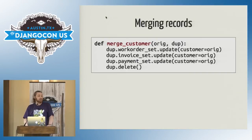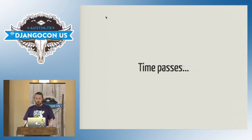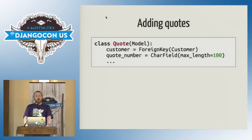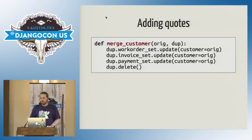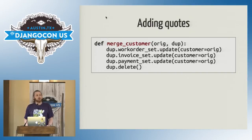We can easily define a merge operation for those customers. An existing customer could have work orders, invoices, and payments. Given a duplicate customer, we find all those related objects, update the foreign key references, and then delete the duplicate. Now you can merge customers to your heart's content. But time goes by, you decide to add new functionality — say, the ability to raise quotes. You define a quote model, roll out that code, and then someone merges a customer record, and all the quotes related to the dead instance disappear. What happened? The merge mechanism doesn't account for quotes. You updated all the work orders, invoices, and payments, but the quotes weren't updated. So when you deleted the duplicate customer, there were still quotes related to that customer, and all the duplicate customer's quotes were also deleted.